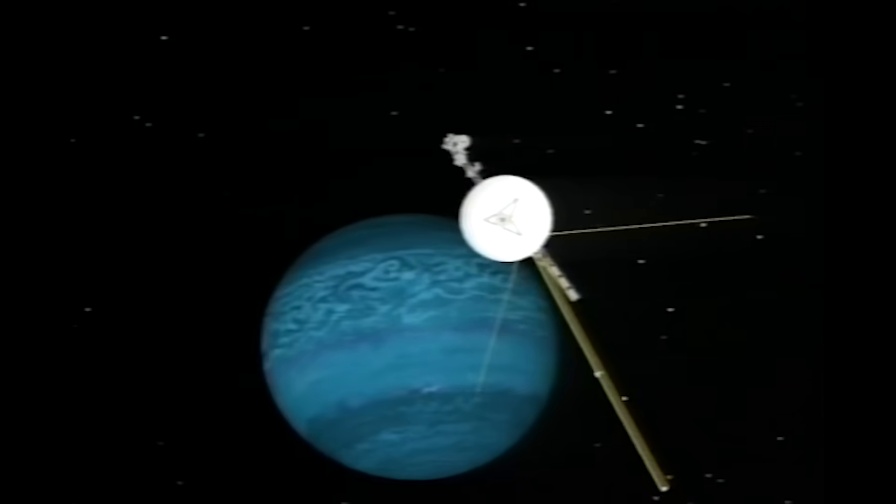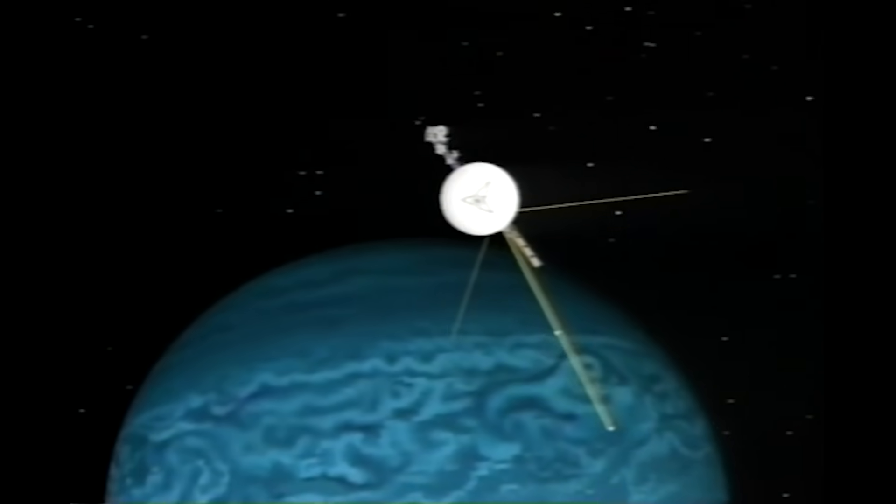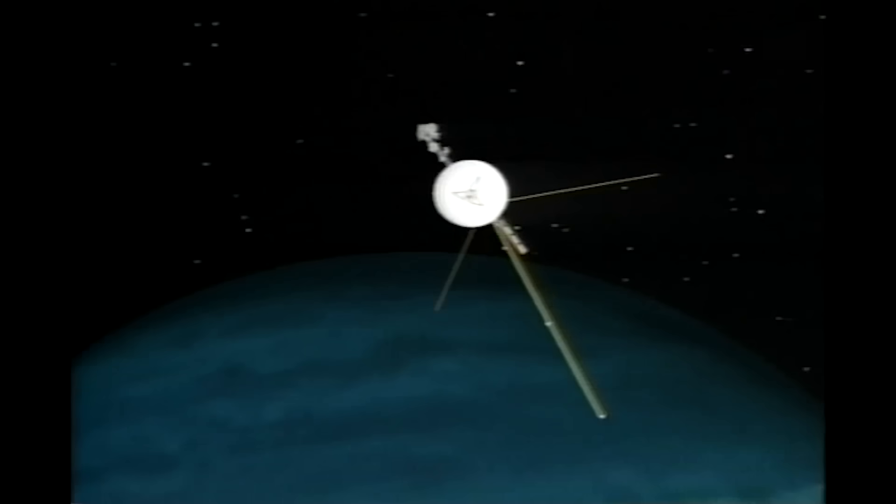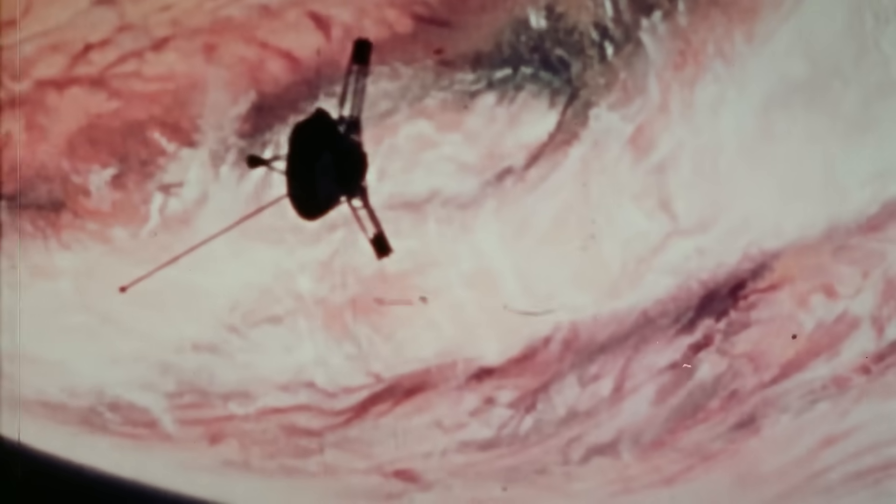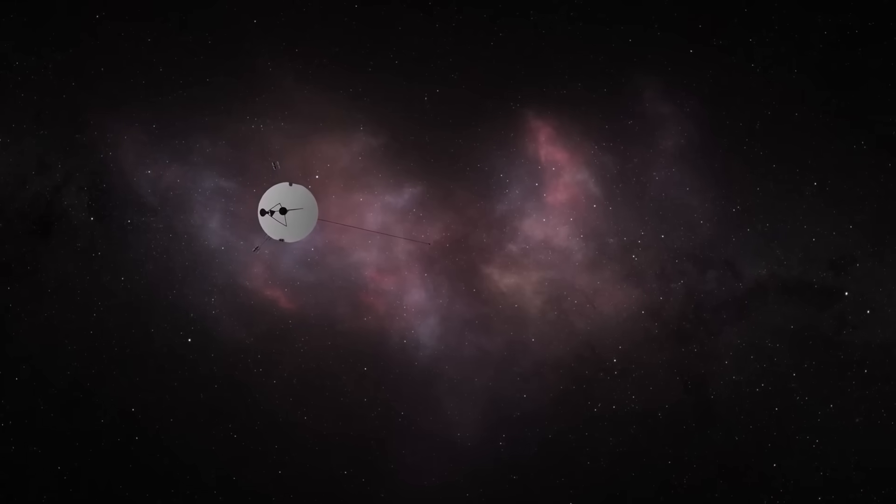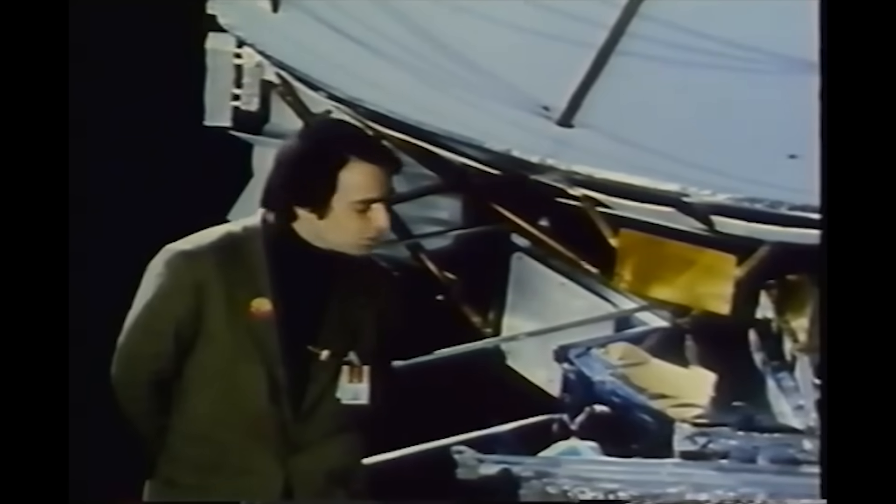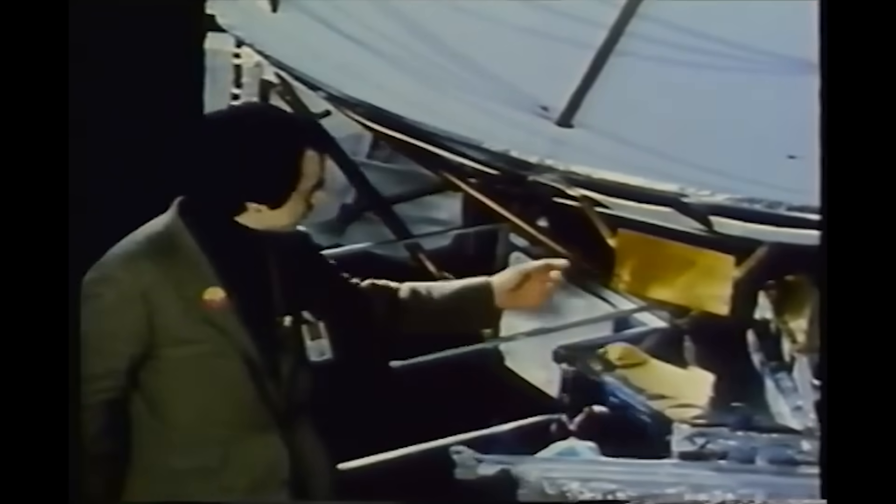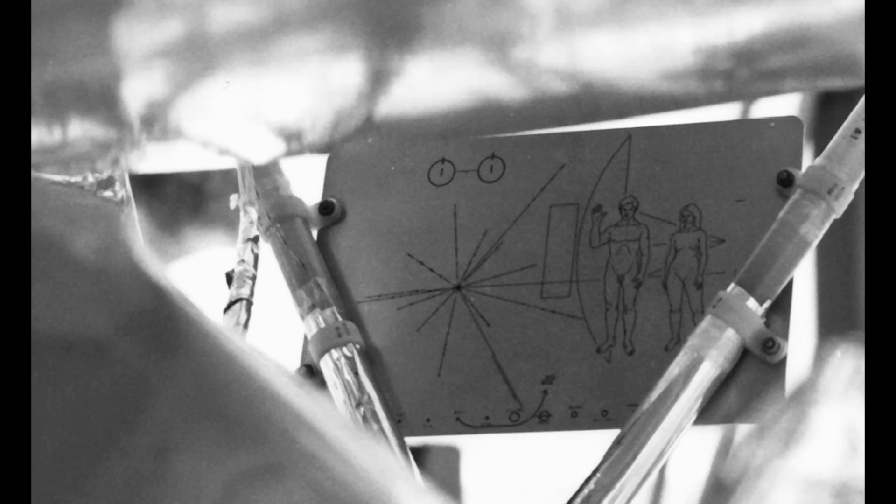Once Voyager 2 had flown by Uranus and Neptune it too would be on a one-way ticket out of the solar system. But this wasn't the first time that spacecraft had been deliberately sent out on such trajectories. The early Pioneer program in 1972 and 1973 sent space probes Pioneers 10 and 11 to also explore Jupiter and Saturn before traveling out of the solar system. Both of these spacecraft carried a small metal plaque identifying their name and place of origin for the benefit of any other spacefarers that might find them.